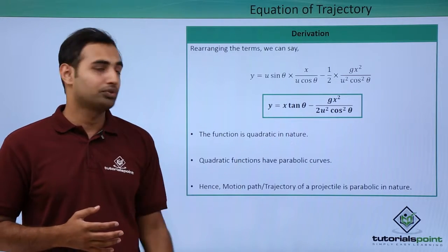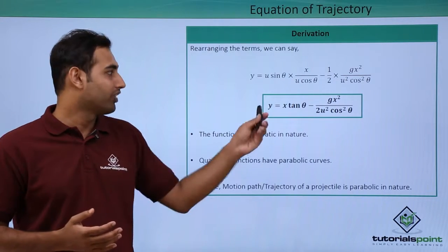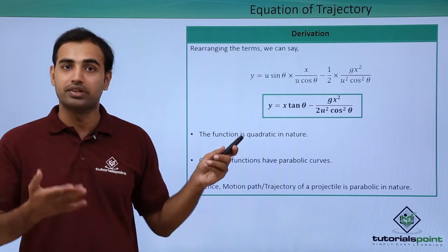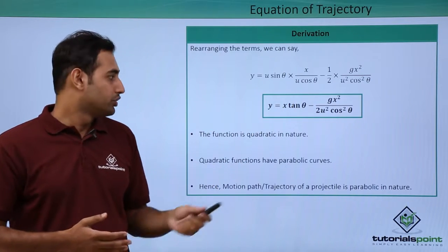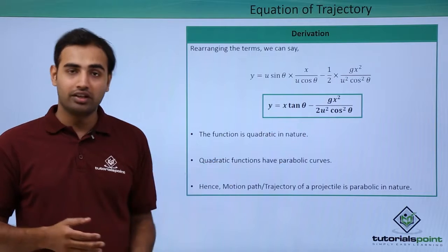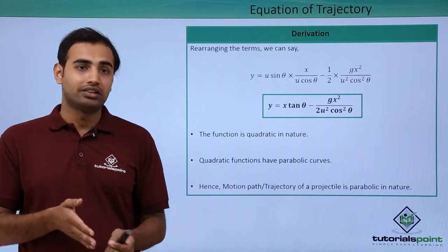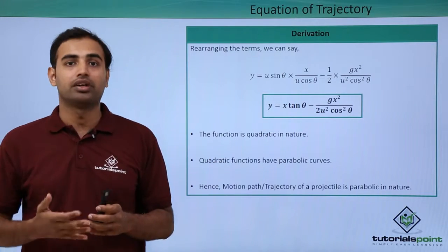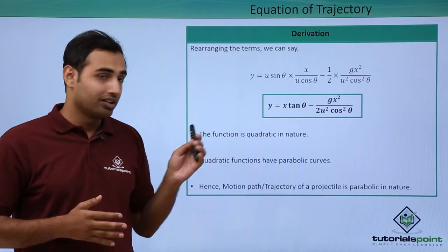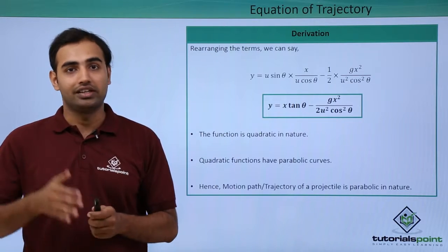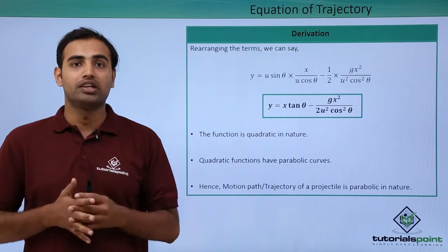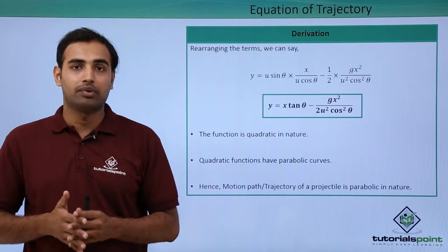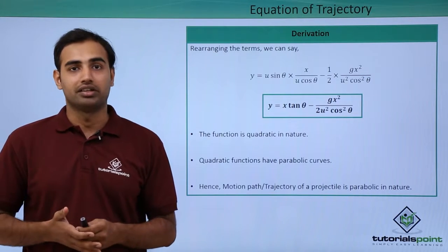Now this function clearly is a quadratic function. We have y is equal to ax square plus bx type equation here. So this function is quadratic in nature, and we know from mathematics that quadratic functions have parabolic graphs. So we have the trajectory of our projectile is parabolic in nature. So from here we prove that the path taken by a projectile is parabolic in nature.